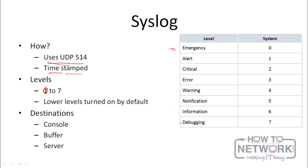If you turn on level four, it's going to log all messages on level four, three, two, one, and zero. Whenever you turn on a level, all the lower levels will be turned on by default. So if you want to log all messages, using level seven means it will log all messages from zero to seven.